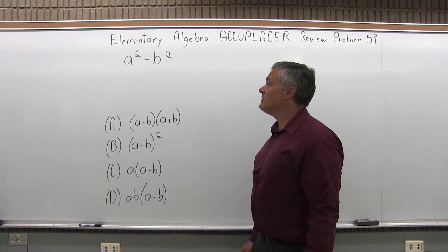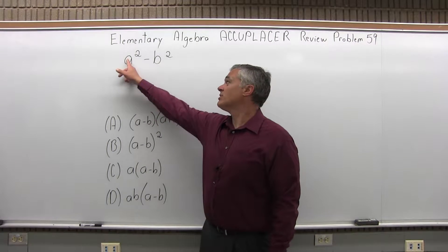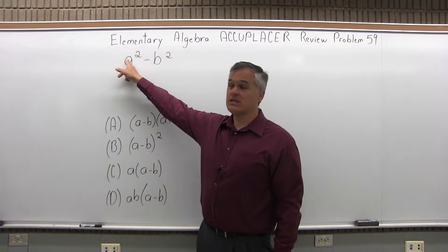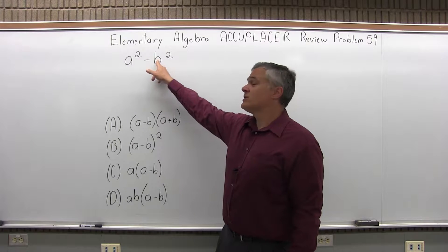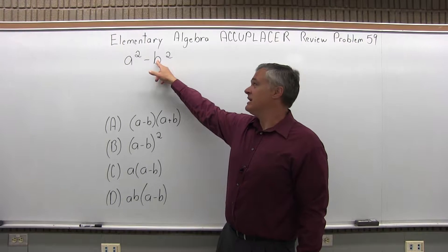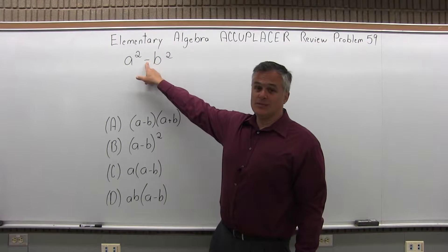Well this is what you call a difference of squares. What you have is something with a perfect square root, square root of a squared is a, and something else with a perfect square root, square root of b squared is just b. And there's a minus in between them.